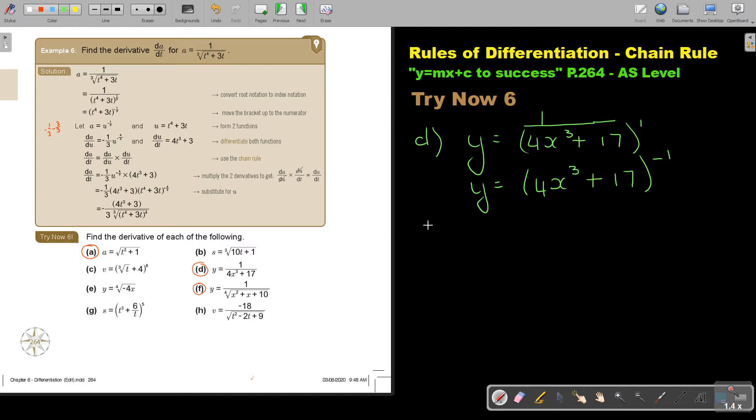And now again, I'm going to do the chain rule. Because I cannot multiply this out. So Y equals U to the negative 1. And then what will U be? U will be 4X cubed plus 17. So now I'm going to differentiate both functions. dY over dU is negative 1, and if you subtract 1 it's negative 2. And dU over to dX is going to be 12X squared. Constant becomes 0.